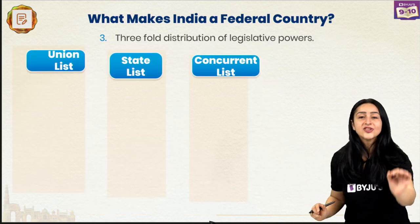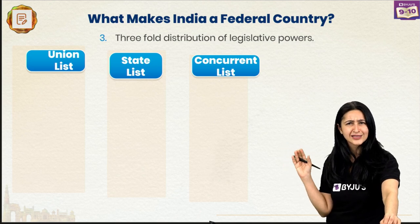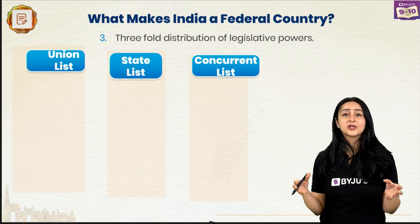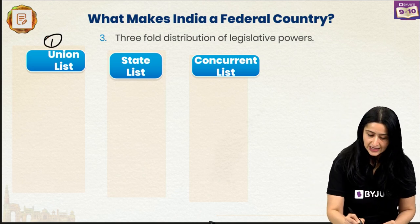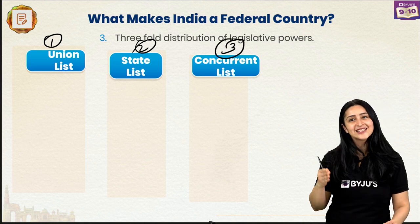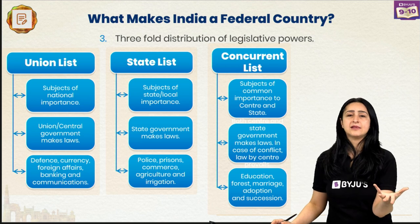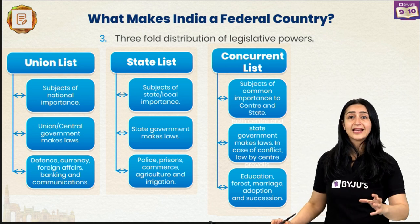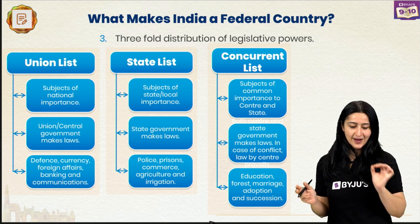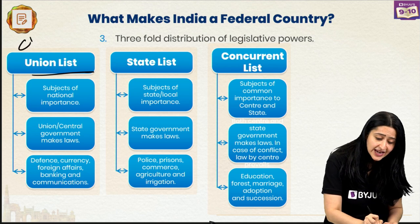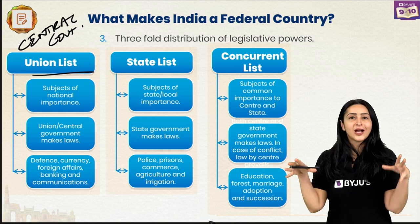The constitution has clearly provided legislative powers for all three different levels of government. These powers have been distributed between the union government and the state government into three categories or lists: number one, the Union List; number two, the State List; and number three, the Concurrent List. Subjects like defense, communications, foreign affairs, and banking are of national importance, so they come under the Union List, and only the central government has the right to make laws related to these subjects.